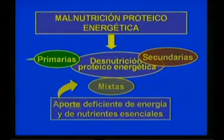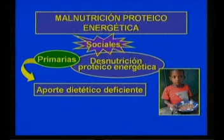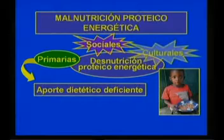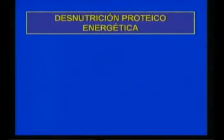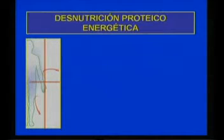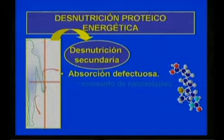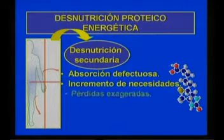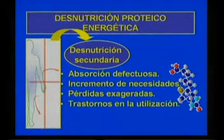Las causas primarias se dan cuando el aporte dietético es deficiente y están muy relacionadas con factores sociales, culturales, económicos y ecológicos en general. Si existieran circunstancias que pueden impedir la adecuada utilización por la célula de los nutrientes, entonces se le denomina desnutrición secundaria, como sucede en la absorción defectuosa de nutrientes, el incremento de sus necesidades, las pérdidas exageradas o trastornos en la adecuada utilización de los mismos a nivel celular.